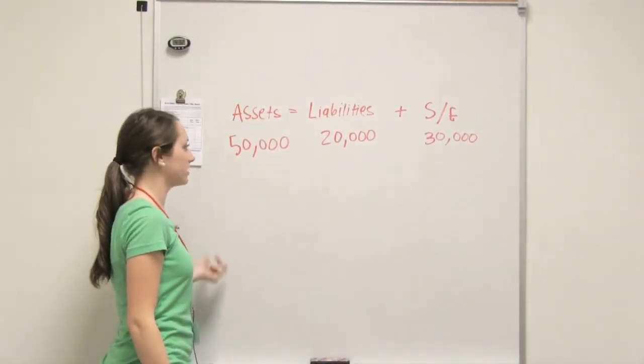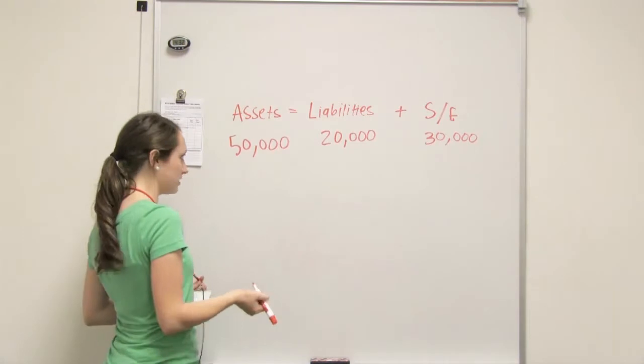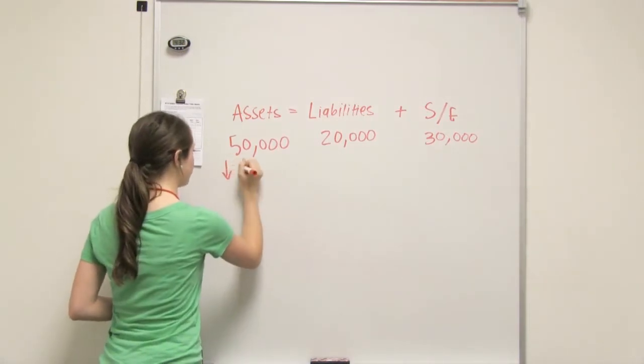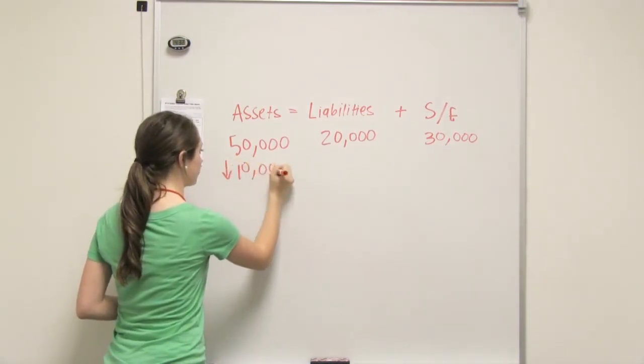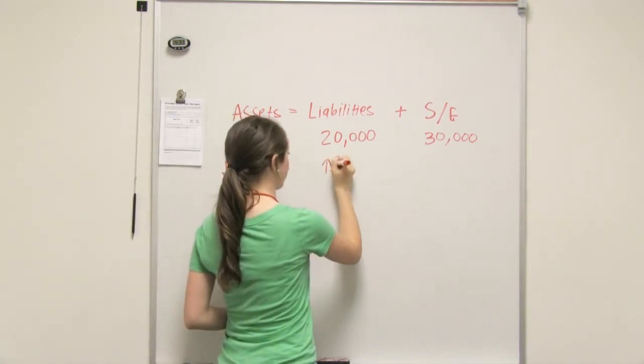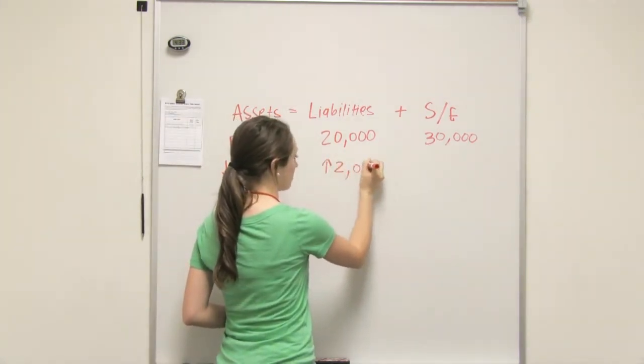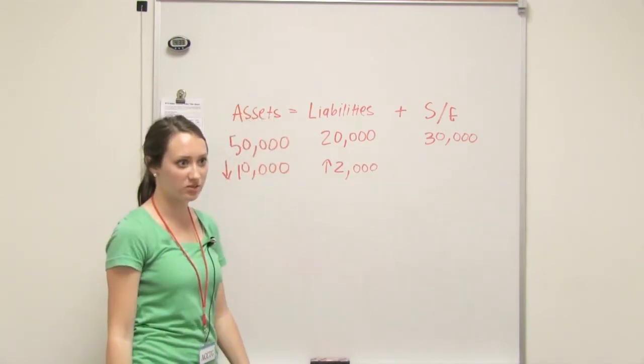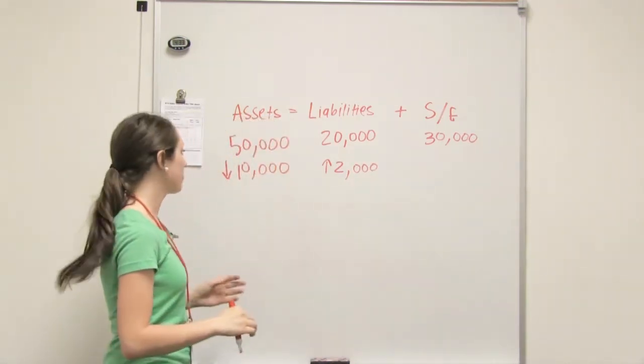So if assets, we'll say it decreases by $10,000. And if liabilities increases by $2,000, this is what he was doing, and then you have to figure out what the last one did to make it equal? Yeah, exactly.